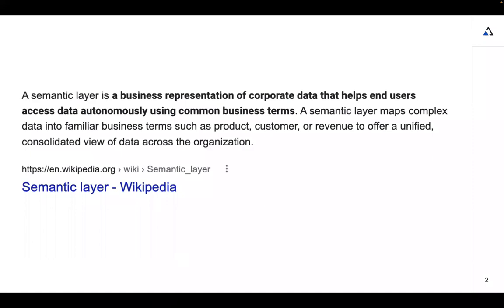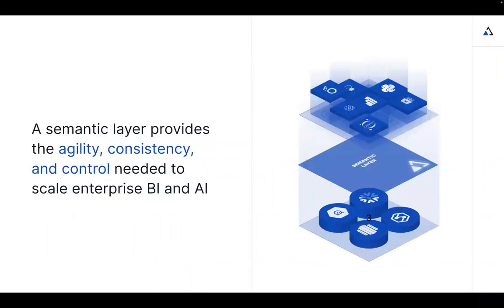First, let's talk about what a semantic layer is. If you Google 'semantic layer,' you come up with a good definition from Wikipedia. What I like about it is that it calls a semantic layer a business representation of corporate data. It helps end users autonomously access data using common business terms. So a semantic layer is a business representation of your data using standardized, consistent, and user-friendly business terms.